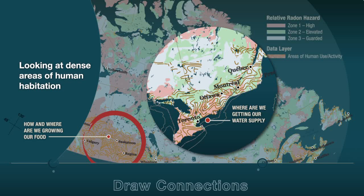Overlay geography on the radon potential map, and it is evident that large centres of high population density and land use are in high radon hazard zones. Significant radon hotspots can be found in every province from coast to coast, in and around Canada's major cities like Calgary, Toronto, and Ottawa.